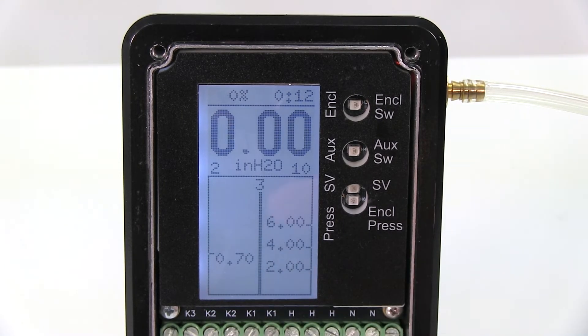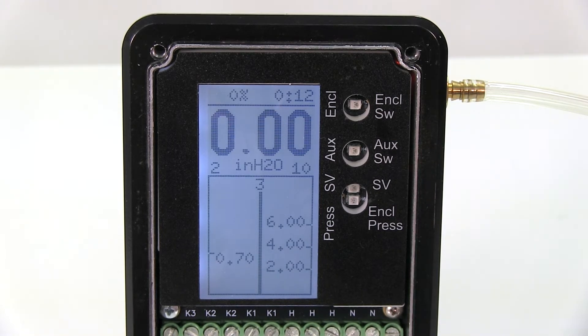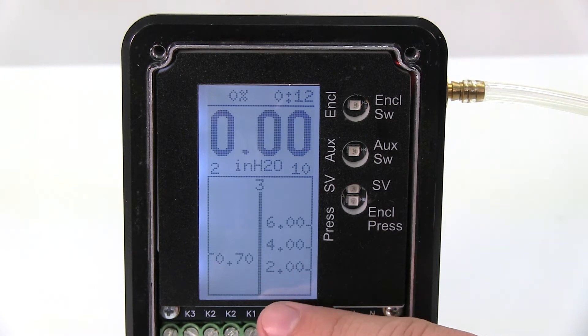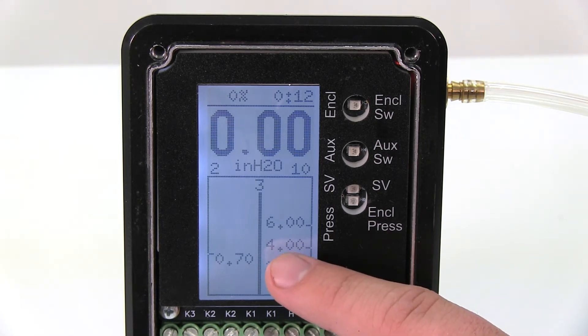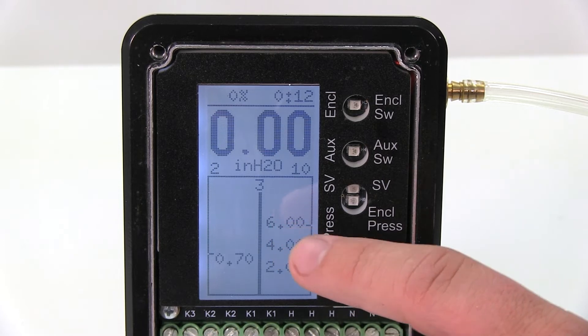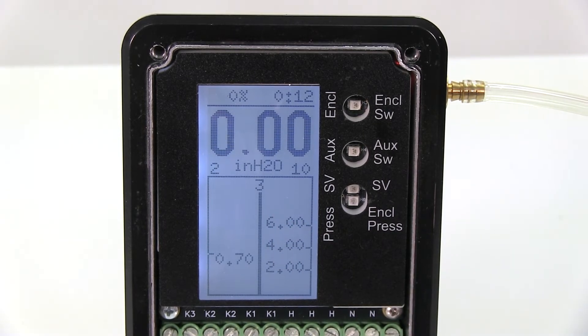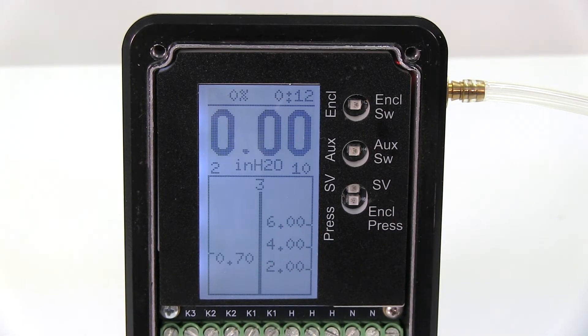0.7 is our minimum pressure, so if we drop below that, we either cut power to our enclosure or set off an alarm. This two inches represents our P2 set point. The four inches represents our purge or P3 set point, and the six inches represents our P4 or max set point.